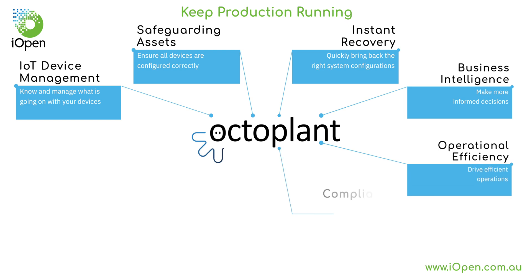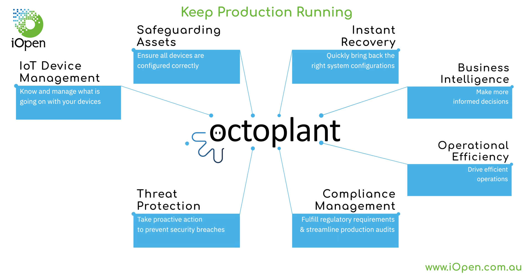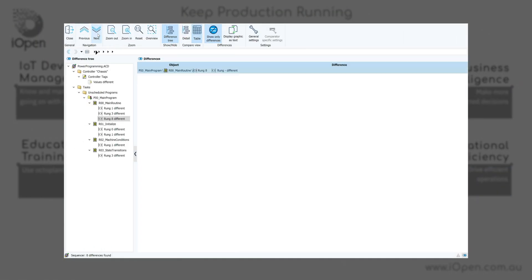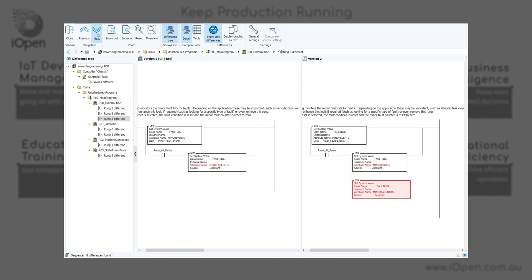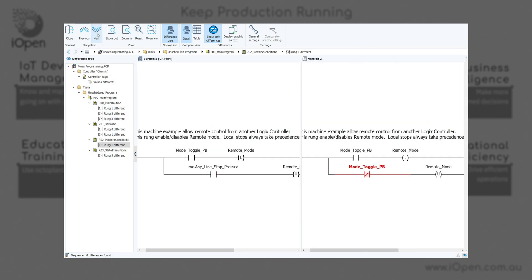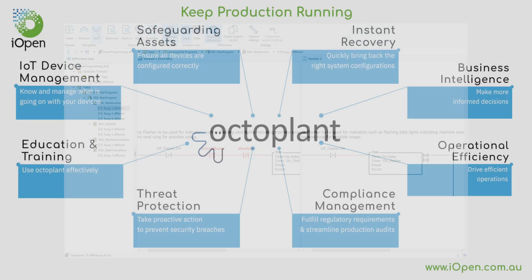OctoPlant offers centralised data storage for managing programmatic changes in both networked and non-networked devices, with a full history of who changed what, when and why. It provides detailed graphical comparisons between the online program and the offline project so you can be certain that your operational technology devices are current and correct.